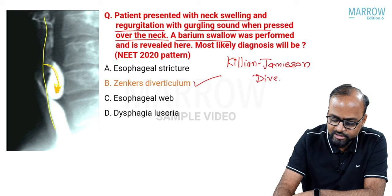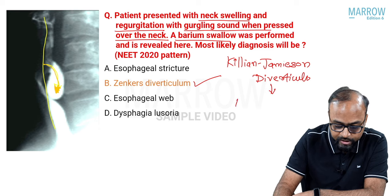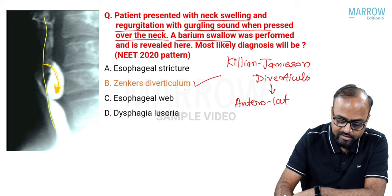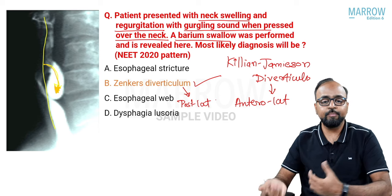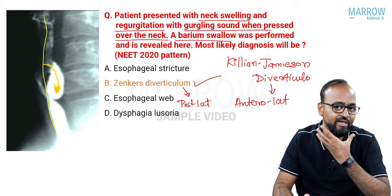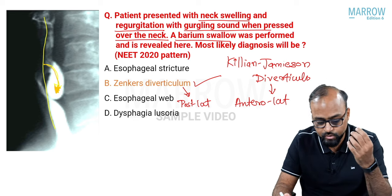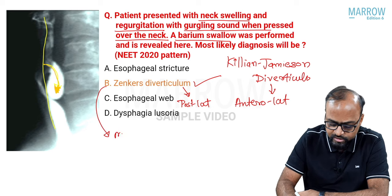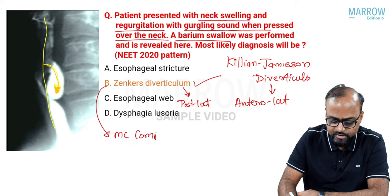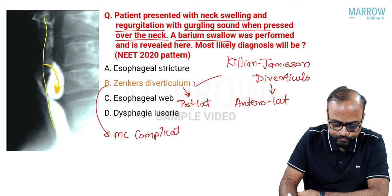Killian-Jamison diverticulum is usually directed anterolaterally, whereas Zenker's diverticulum is directed posterolaterally. A very typical history is swelling over the neck which when pressed gives a regurgitation sound. The most common complication associated with Zenker's diverticulum is aspiration.